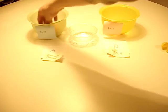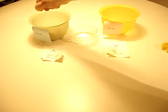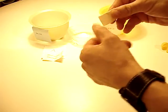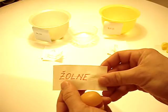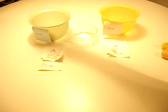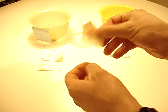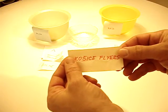Now we go for the blue bowl for the second team in group A. That would be Team Žovne. And the second team in group B would be Košice Flyers.